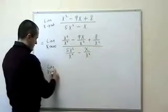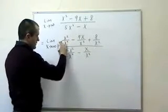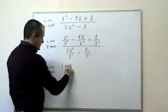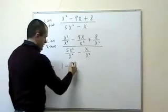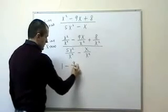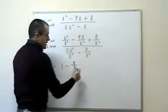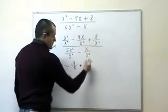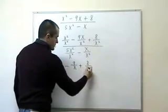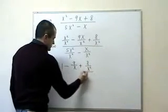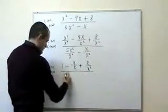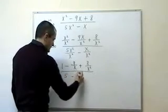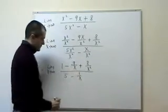We'll get the limit as x goes to infinity. x squared divided by x squared will give me 1 minus 9x over x squared will give me 9 over x. 8 over x squared, well there's nothing to be done there, so we'll still get 8 over x squared. And that's all over 5 minus 1 over x.